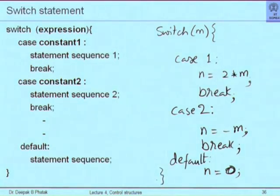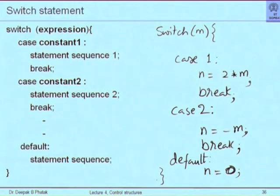What I have written is a program that says: if the value of M is 1, N should be 2; if the value of M is 2, N should be minus 2; and if there is any other value of M, N should be 0. This is how such logic can be implemented easily. It makes particular sense when you have 10 actions for one case, 20 for another, 5 for another — the switch becomes an extremely easy way of tabulating first option, second option, third option, fourth option.